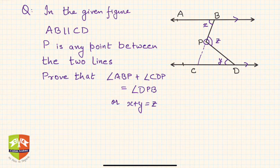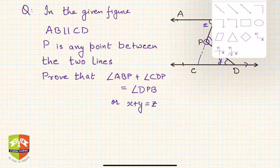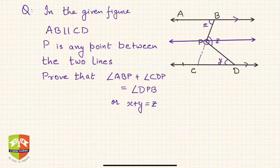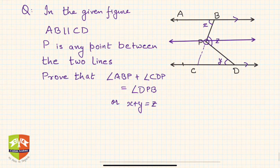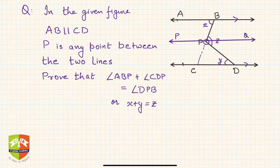Let us draw a line parallel to AB and CD but passing through P. So we have done a construction here where a line, let's say PQ, has been drawn to be parallel to AB and CD. Now this helps us a lot because if you see, now z is